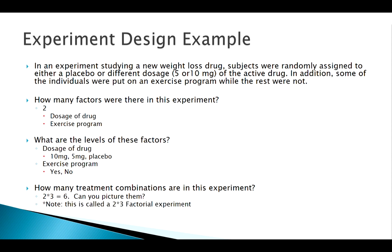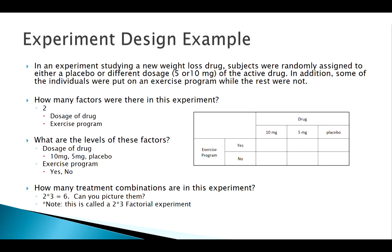A helpful way of thinking about this is to picture it in a table. We've got all the different levels of drug along one axis and whether or not they're on the exercise program on the other. You can think about the treatment combination of placebo and no exercise program as the control group. The others are all getting some sort of treatment.